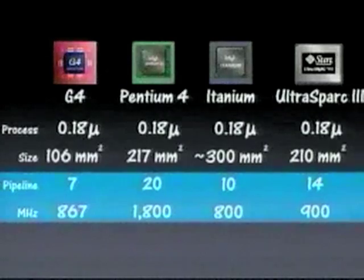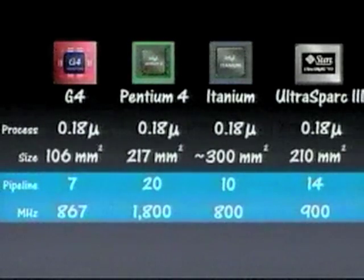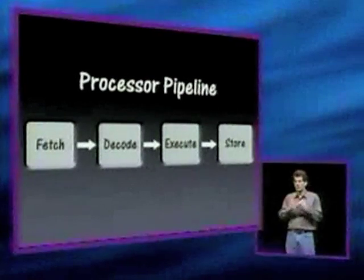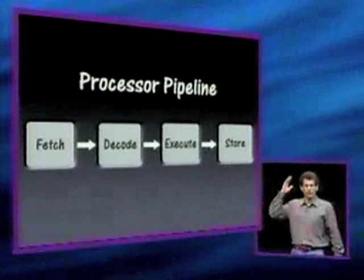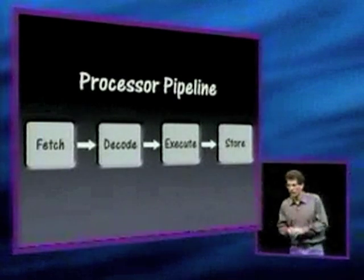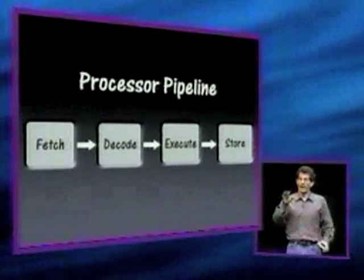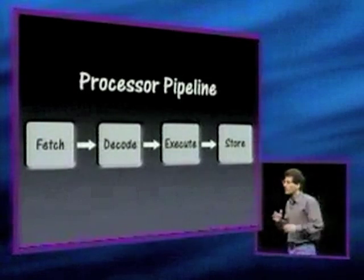Now let's look at how Intel got to 1.8 gigahertz. They did that by going into 20 pipeline stages, whereas the G4 is only seven pipeline stages. So what's a pipeline stage? All processors execute instructions through their pipeline. In this simplified four-stage version, an instruction gets fetched, decoded, executes, and the results are stored. All the processors we're looking at have more pipeline stages than this, with one or more of these stages broken down into multiple pipeline stages.